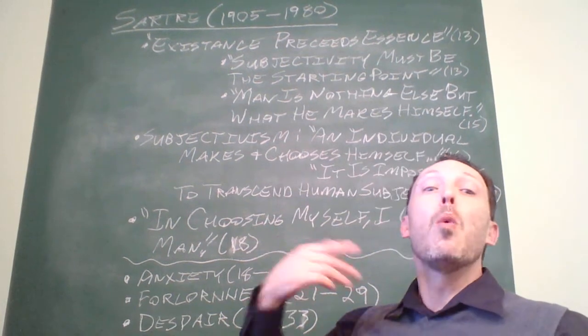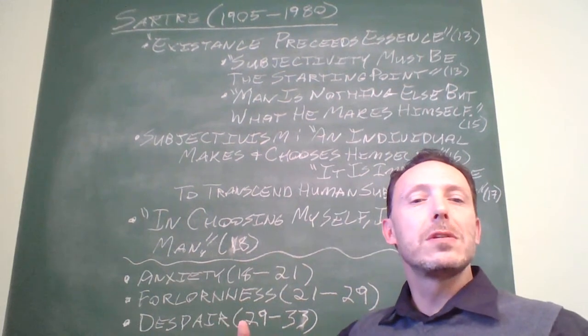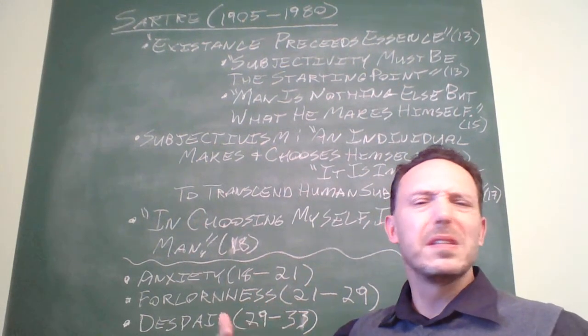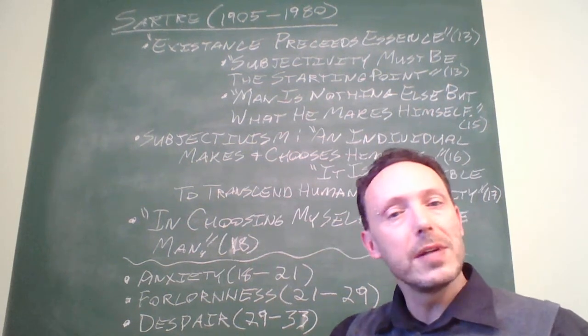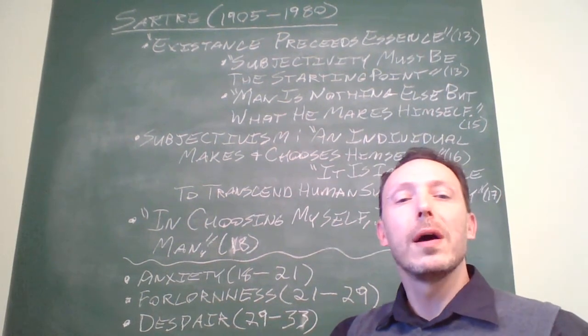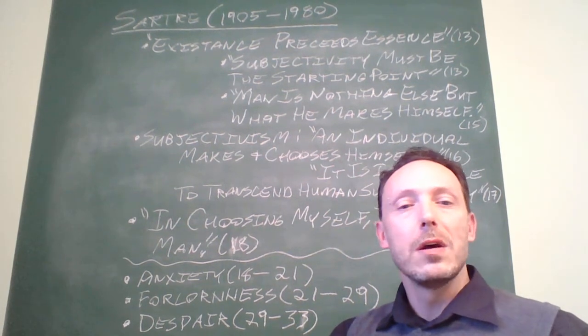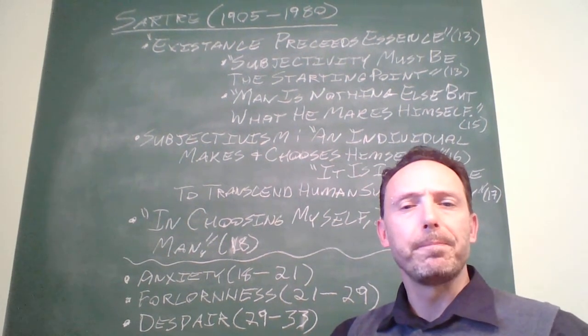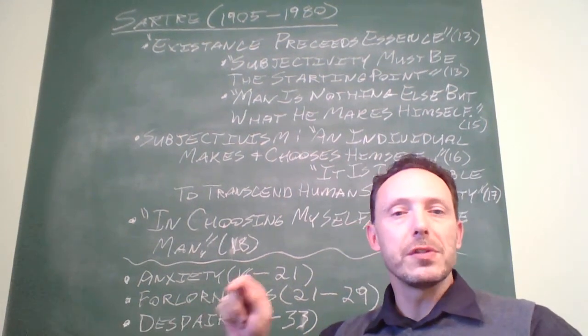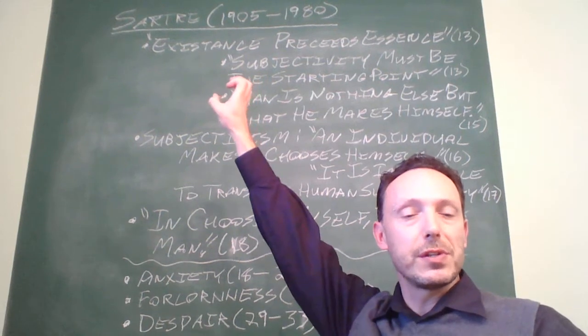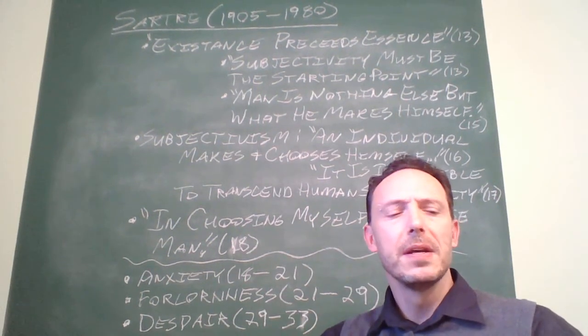That is, whatever we choose to be is not just some flippant choice but rather it's a normative statement. We are essentially all trying to be the best human beings that we can be. Essentially, what we are doing with each and every one of our choices and our actions if existence precedes essence is defining all of humankind.